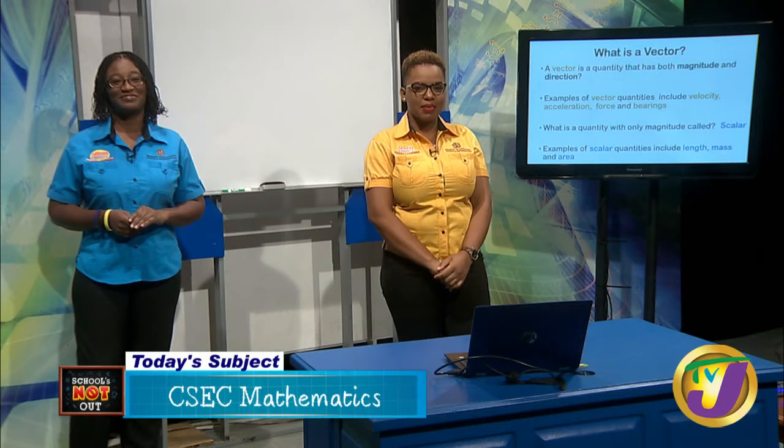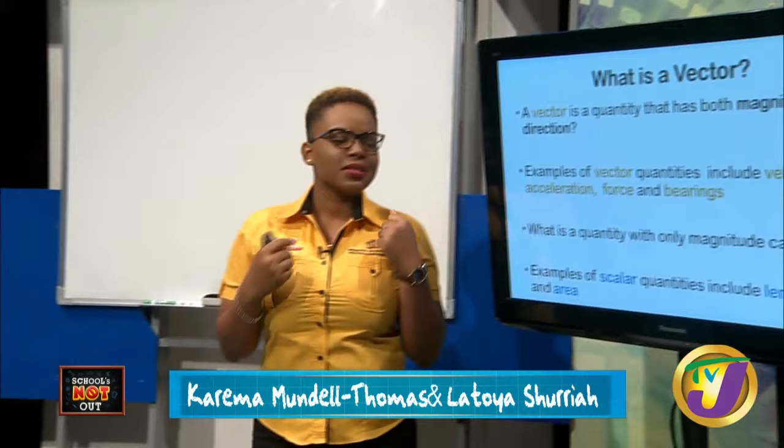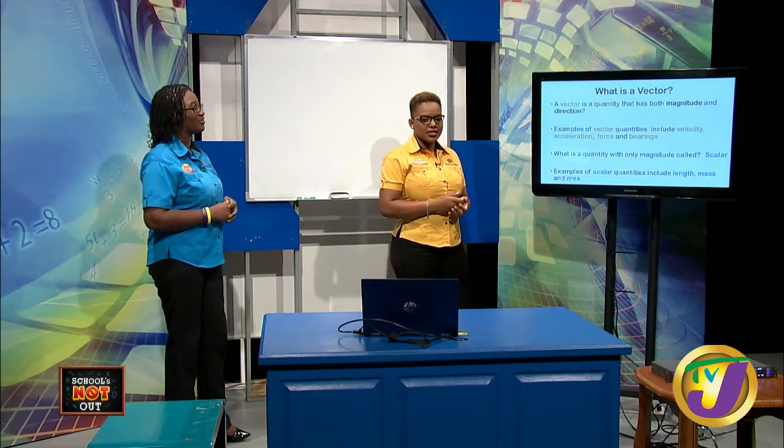Welcome back to Schools Not Out, your daily classroom for CSEC and CAPE students. Today we've been discussing CSEC Mathematics — introduction to vectors. A vector is a quantity that has both magnitude and direction, and a quantity that has only magnitude is called a scalar. Let's do a quick recap.